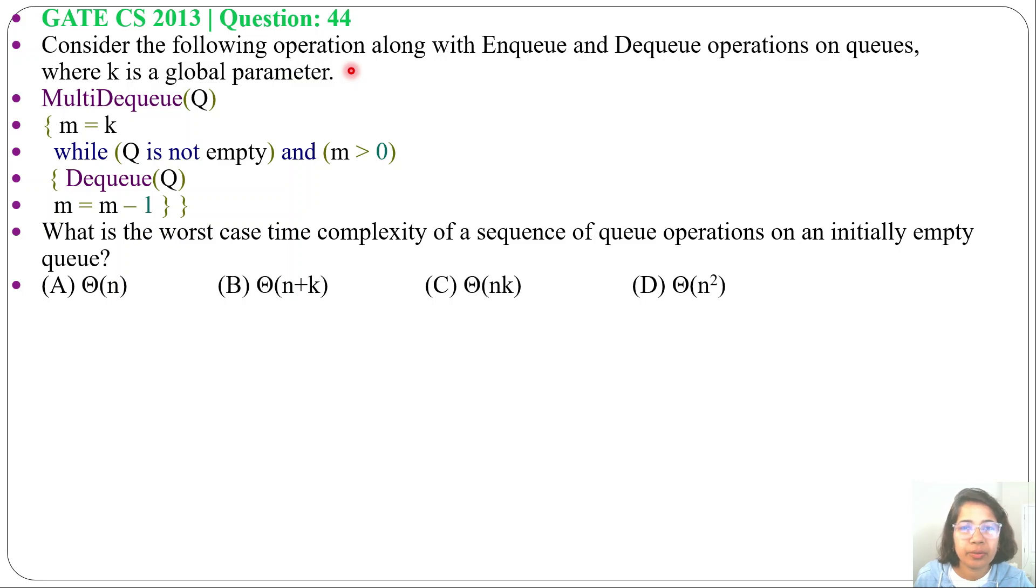Let's solve one previous question of queue. This question was asked in GATE CS 2013, question number 44. Consider the following operation along with enqueue and dequeue operations on queue, where K is a global parameter, then one function MultiDequeue is given. What is the worst case time complexity of a sequence of queue operations on an initially empty queue? Four options are given. Initially queue is empty, then we will enqueue some elements in queue.